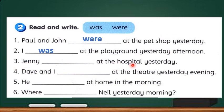Number three, Jenny at the hospital yesterday. Jenny is a singular noun. So, the answer is was. Number four, Dave and I at the theater yesterday evening. There are two persons here, so we should use were, yes.